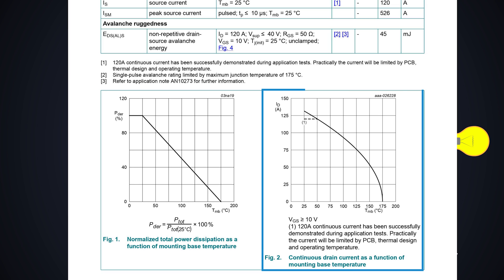If we see the drain current vs junction temperature graph, when the junction temperature of the MOSFET increases, the current handling capacity of the MOSFET decreases exponentially and eventually, it goes to 0 at 175 degrees Celsius even if we give the sufficient gate voltage.